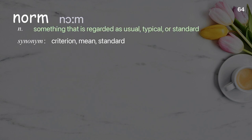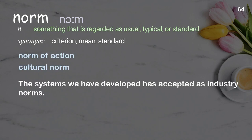Norm: something that is regarded as usual, typical, or standard. Examples: norm of action, cultural norm. The systems we have developed have been accepted as industry norms.